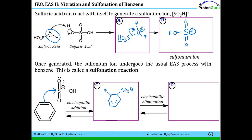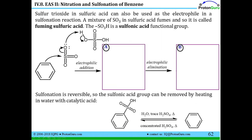We do the electrophilic addition step, drawing it as SO3H attaching to the ring. We've broken the double bond and made our carbocation intermediate, but haven't yet lost the H until the electrophilic elimination step. After elimination, the net result is that benzene's H has been replaced with the SO3H group — this is called a sulfonation reaction and you've made a sulfonic acid. You can also perform this reaction using a mixture of SO3 in sulfuric acid, which can produce visible fumes and is referred to as fuming sulfuric acid.